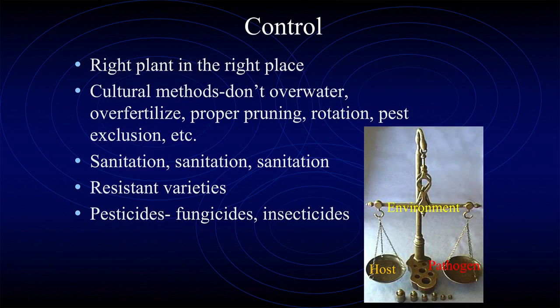Cultural methods first - don't overwater, proper pruning, keeping the pests out. Sanitation, sanitation, sanitation - getting the infected plant material out of there so it doesn't stay to harbor and infect new plant material. That's probably one of the most important things. Resistant varieties wherever possible. I'm not against fungicides if you need to - that is part of integrated pest management. The right chemical at the right time can really save you a lot of problems in the future.